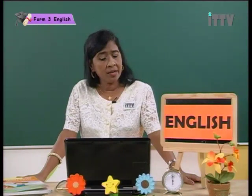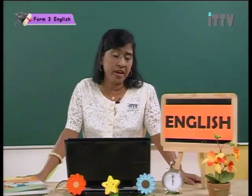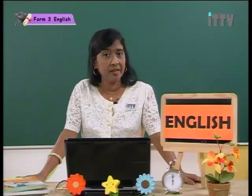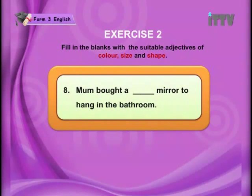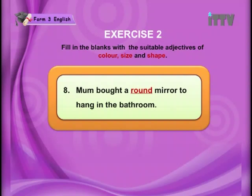Number eight: Mom bought a blank mirror to hang in the bathroom. What kind of a mirror did she buy? Think of shapes. Answer: Mom bought a round mirror to hang in the bathroom. We have mirrors that come in different shapes — some are fanciful shapes. Here we are using the adjective 'round,' but you can also use other adjectives to describe the mirror. Number nine: Meaner is rather blank and blank — two adjectives required. Answer: Meaner is rather short and fat.